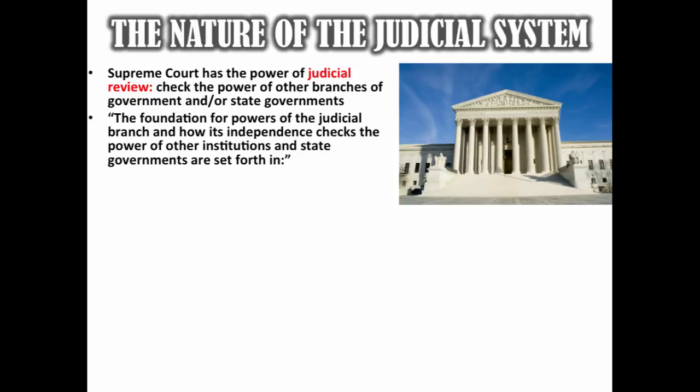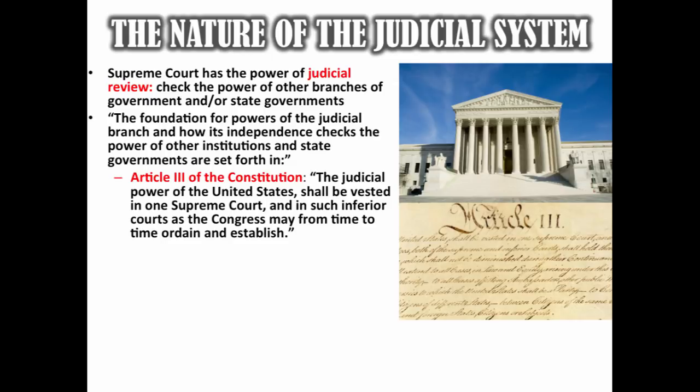If you are taking AP Gov, this is straight out of the framework: the foundation for powers of the judicial branch and how its independence checks the power of other institutions and state governments. There are a couple of foundational documents you should know. Article 3 of the Constitution states: 'The judicial power of the United States shall be vested in one Supreme Court and in such inferior courts as the Congress may from time to time ordain and establish.' Article 3 is where you get the setup of the judicial branch.